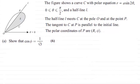Hi there. Now in this question we're given this figure which shows a curve C with polar equation R equals A sine 2θ, where θ is greater than or equal to 0 but less than or equal to π/2 radians, and a half-line L.